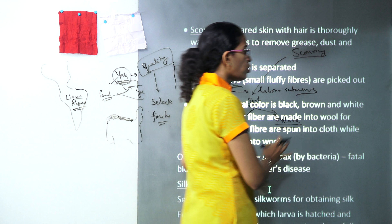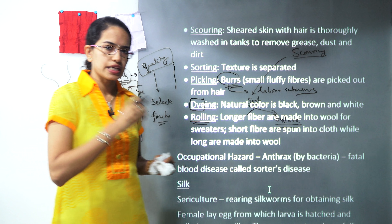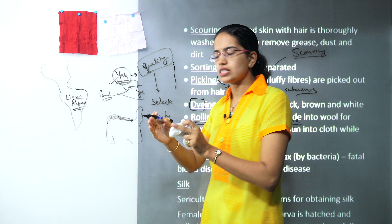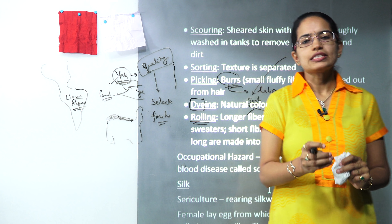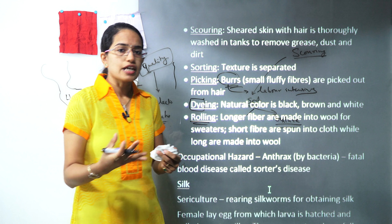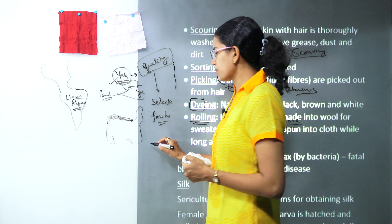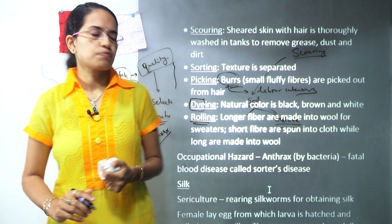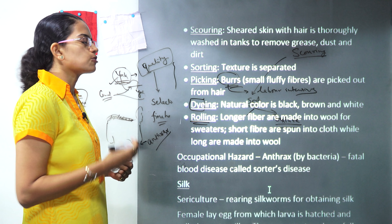However, this whole process of rearing sheep and creating wool has some hazard. Any occupation working with a specific concept has a certain hazard, known as an occupational hazard. A person working in a coal mine has the hazard of pneumoconiosis — the lungs being affected by coal. Similarly, a person working with sheep has the occupational hazard of carrying a disease known as anthrax. Anthrax is spread by bacteria, affects the blood, and is also known as blood disease or sorter's disease.